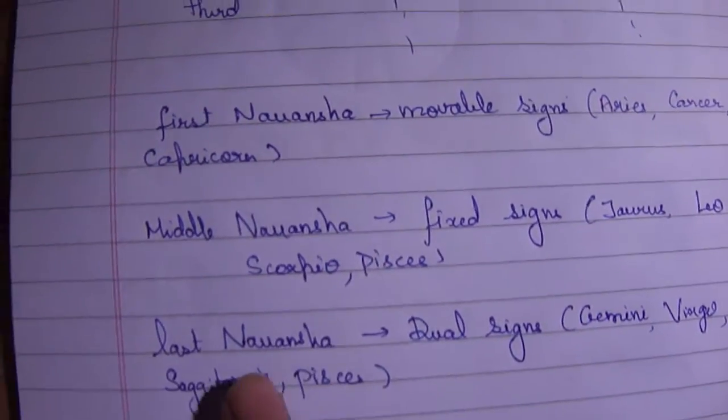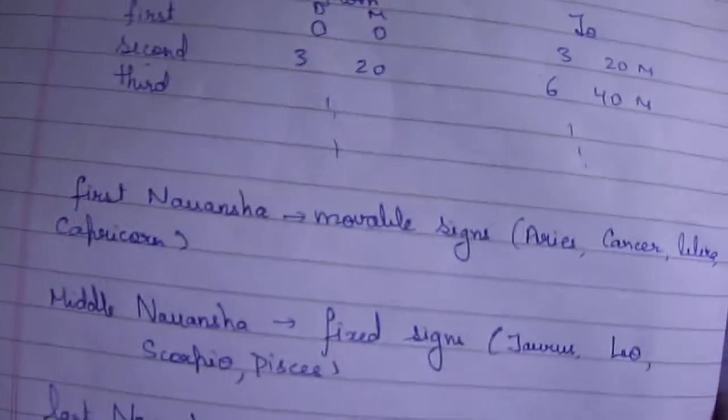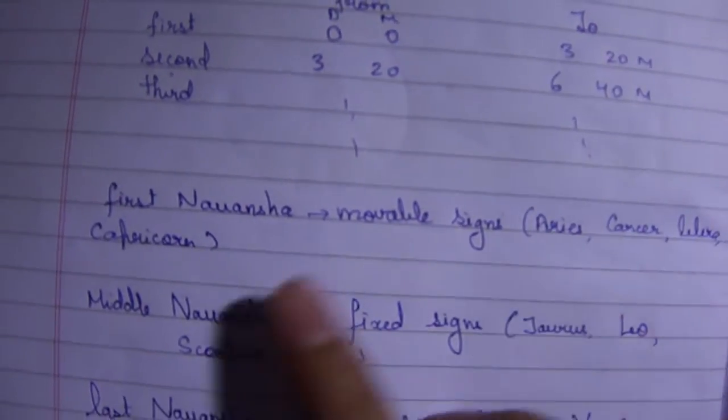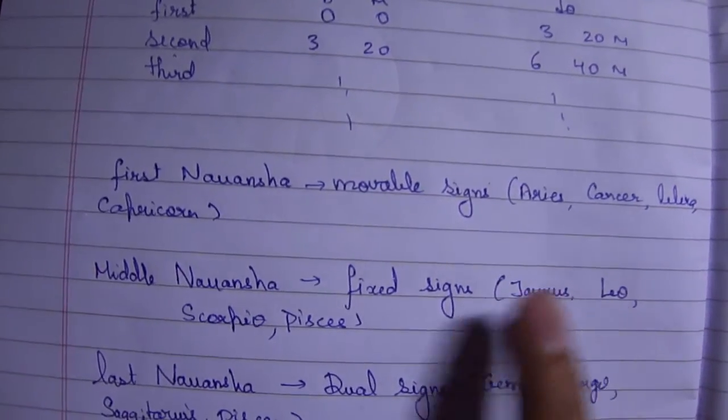The first Navamsha is formed of the movable signs, that is Aries, Cancer, Libra and Capricorn, whereas the middle Navamsha is considered of Taurus, Leo, Scorpio and Pisces.